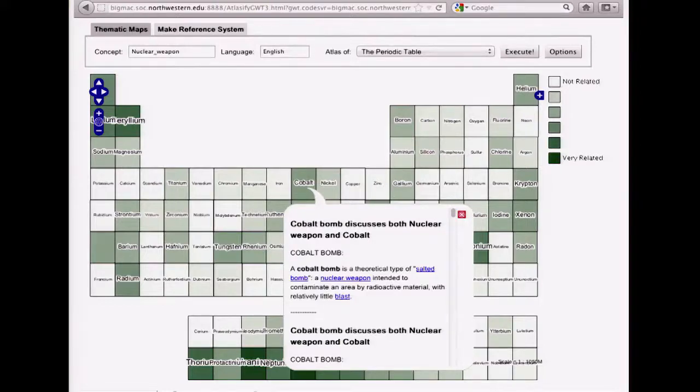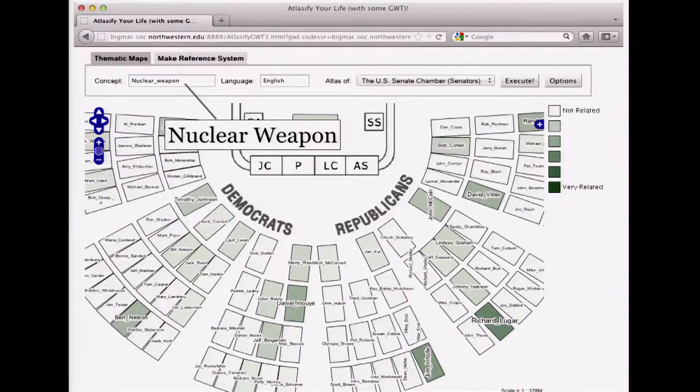So we've gone all out here with the explicit spatialization, and Atlasify supports a number of different reference systems. So for example, here is the U.S. Senate seating chart reference system. We have the same query concept here, nuclear weapon, but it's visualized instead of on the world map, and instead of on the periodic table, it's the U.S. Senate seating chart. It's a little bit of an old seating chart. There are some senators who have moved on, and some senators who are new, but you get the basic idea.